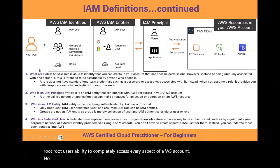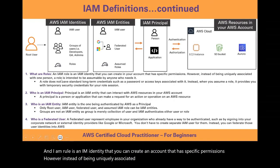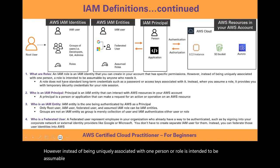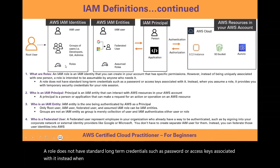Now, what are roles? An IAM role is an IAM identity that you can create in an account that has specific permissions. However, instead of being uniquely associated with one person, a role is intended to be assumable by anyone who needs it. A role does not have standard long-term credentials, such as a password or access keys associated with it. Instead, when you assume a role, it provides you with temporary security credentials for your role session.